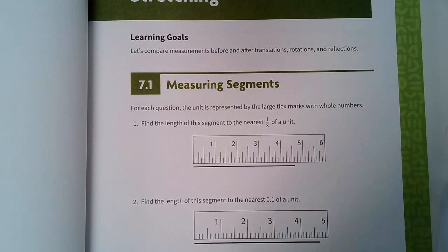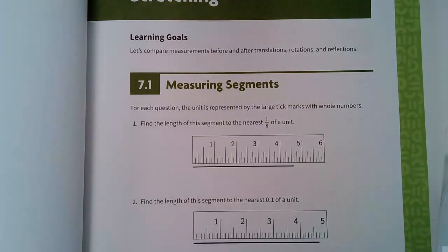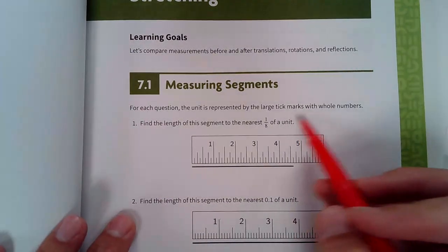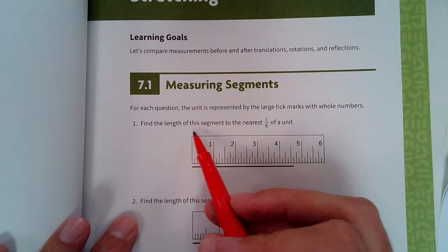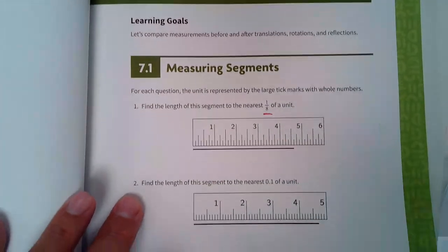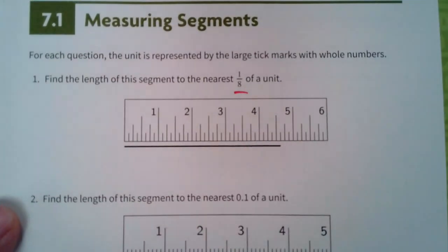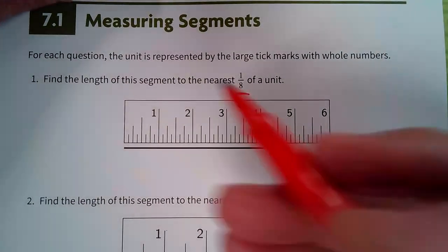Okay, so this is page 53, lesson 7 in unit 1. It says for each question, the unit is represented by the large tick marks with the whole numbers. Find the length of this segment to the nearest one-eighth. Let's zoom in on this because I know some of you guys still really struggle with the marks on a ruler or a yardstick.